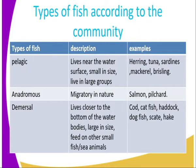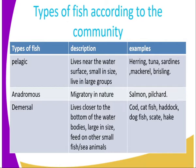We can also classify fish according to their community, and according to the community we get three classes. There is the pelagic fish, there is the anadromous, and there is the demersal fish. Pelagic fish live near the water surface. Their bodies are small in size, and they live in large shoals.